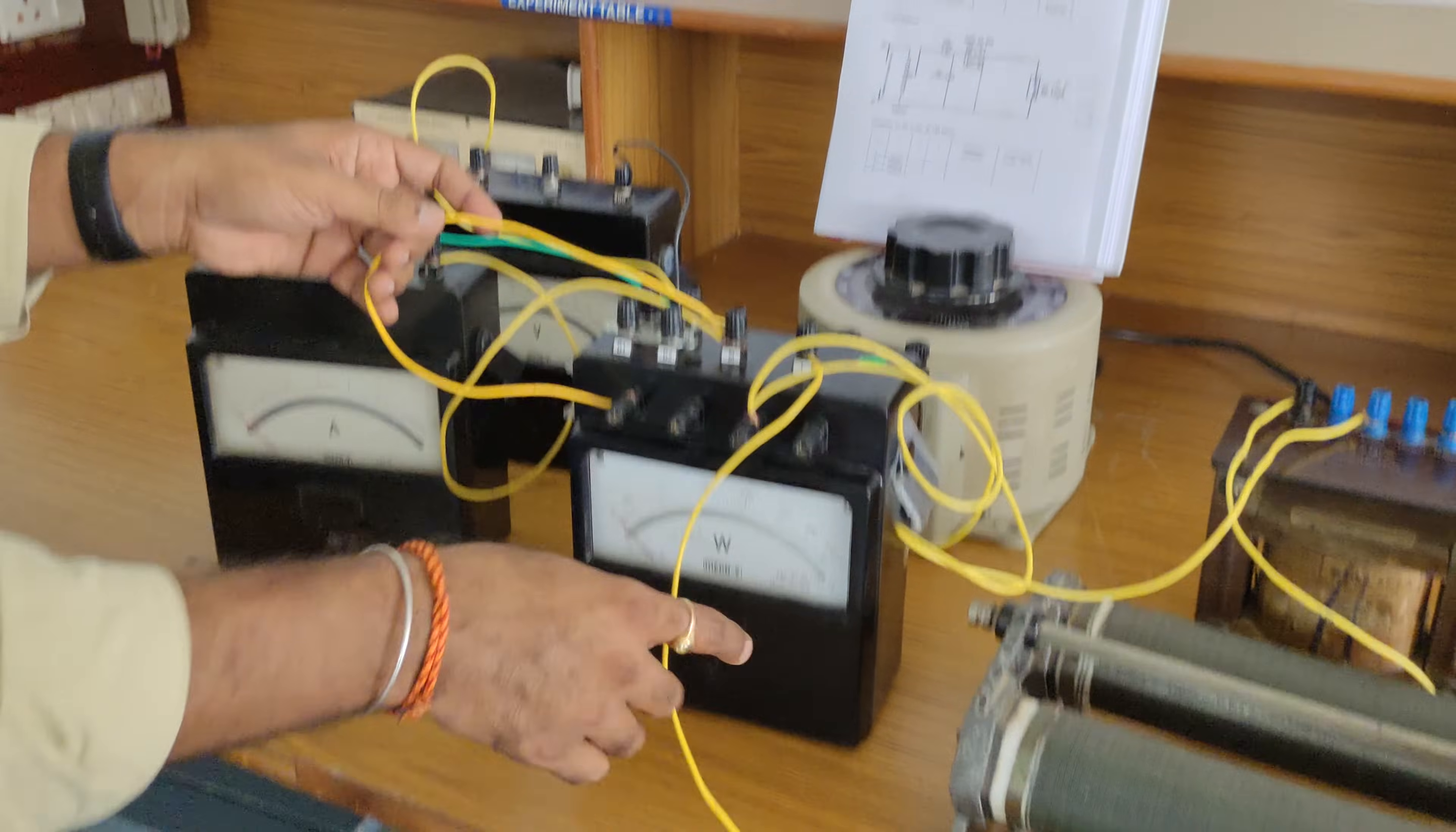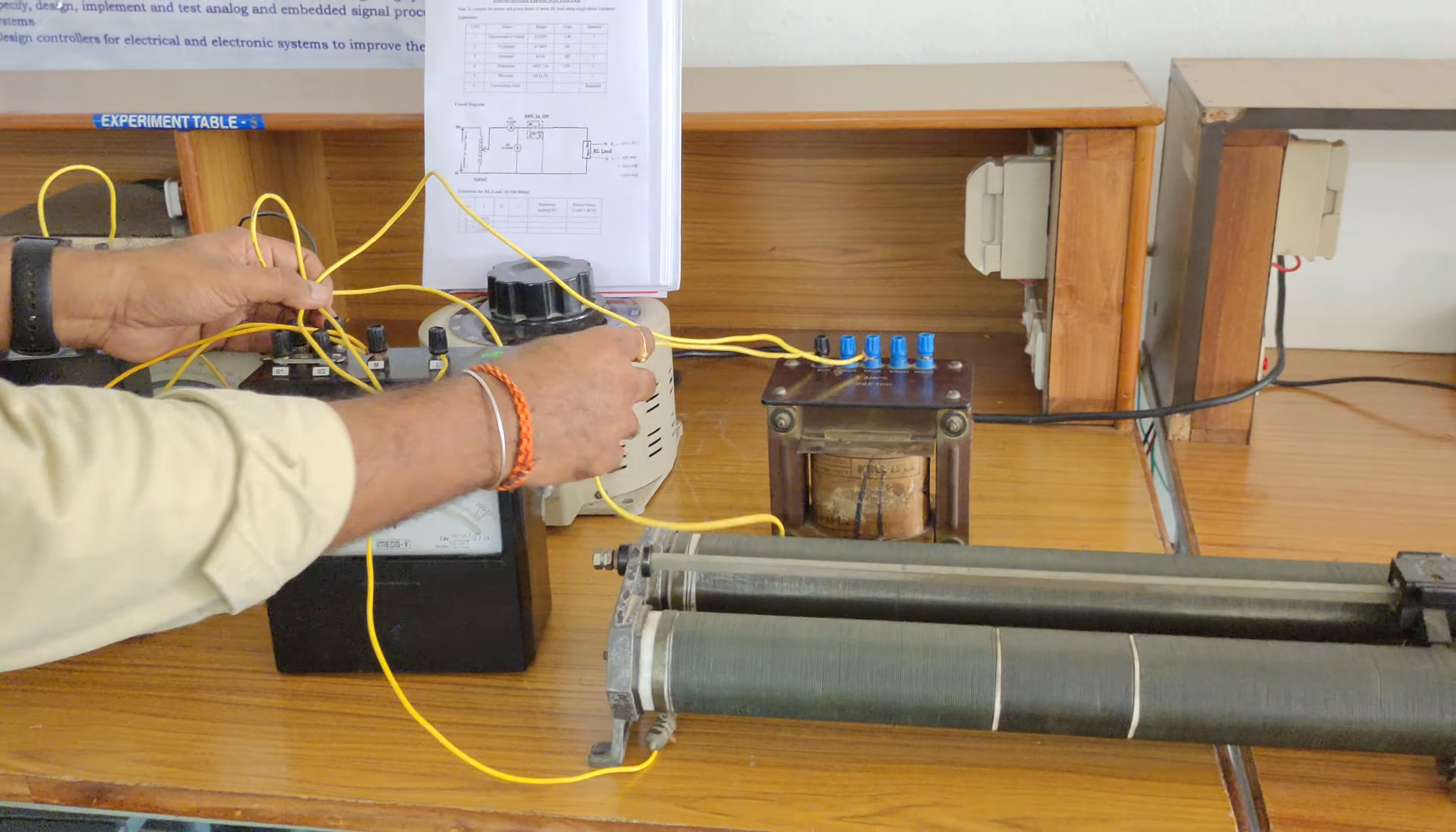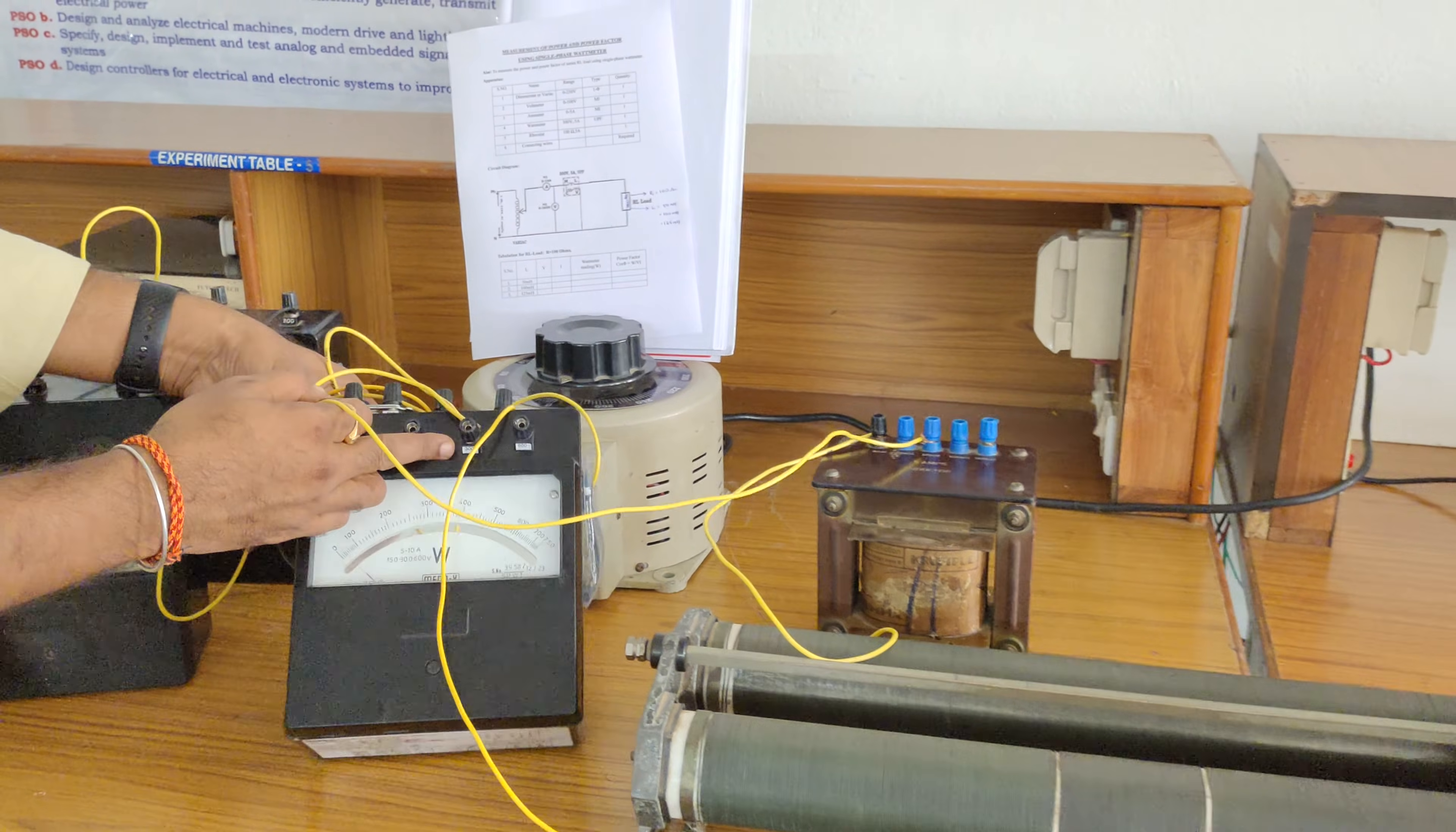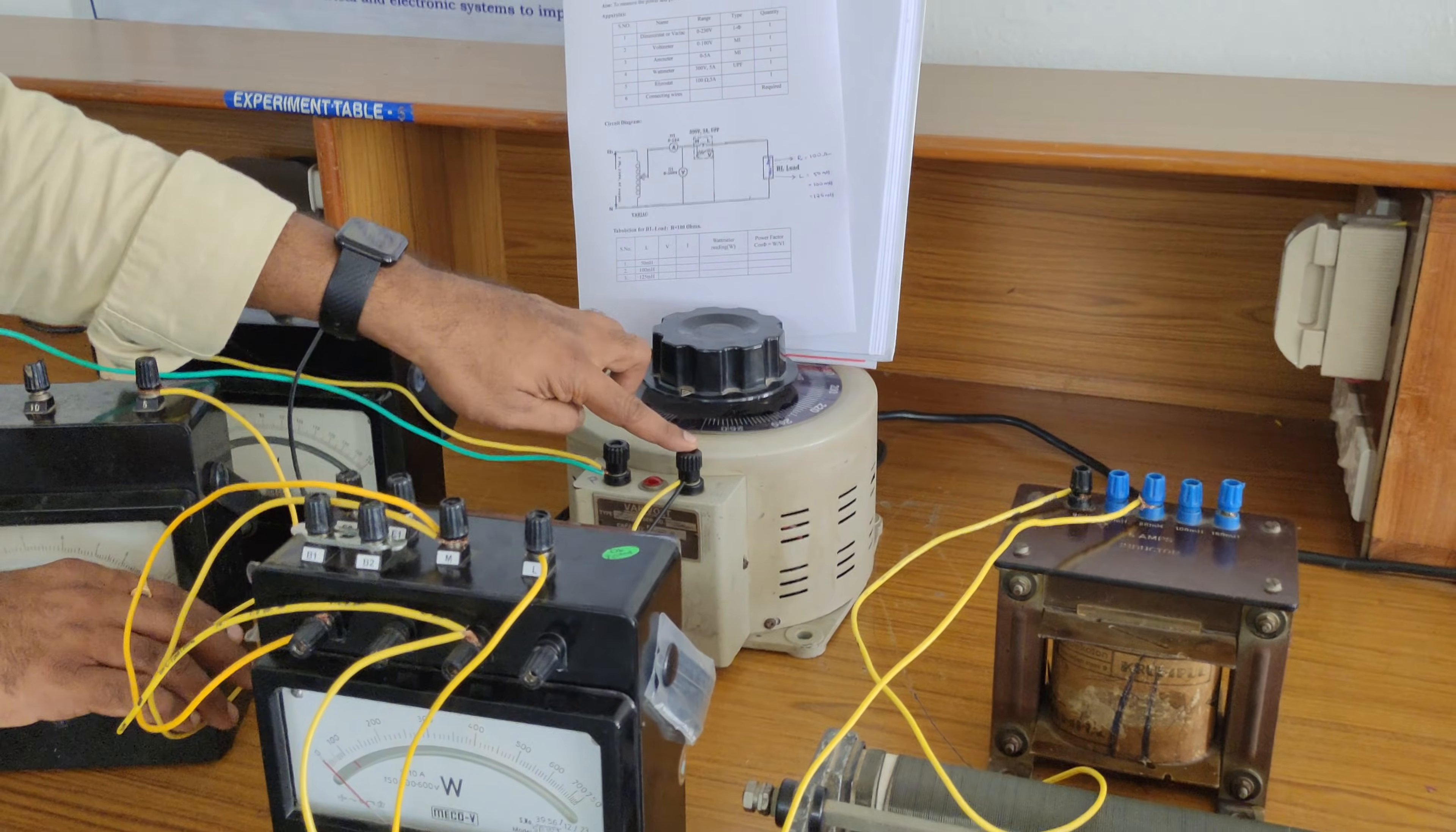And another one is in that wattmeter we are having L. That L is connected to rheostat one end. Rheostat other end is connected to that inductor here common. And the inductor 50 millihenry is connected to V, V in the part of voltmeter, wattmeter here. Again this entire wattmeter V is connected to neutral terminal. This one is our neutral terminal.